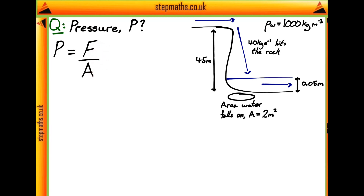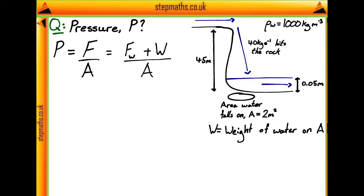So the force on the rock at the bottom of the waterfall is equal to the force of everything above it divided by this area of 2 metres squared. But what actually is the force on this area? Well, there are actually going to be two things adding to this force. First, there is the force of the water coming down from the waterfall and hitting it. But we also have the water on top, which is going to provide a weight. So we're going to have to find both of these, and together they contribute to the total force and therefore the pressure.